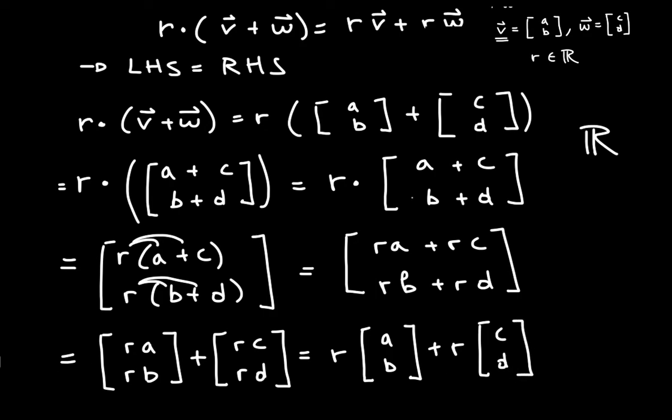However, in our original definition, we said that v was equal to [a, b], so therefore this is v. So this is equal to r times vector v, added to r times, what is this? We defined this array of c and d to be the vector w. So this is vector w, and there you go, that's the proof.